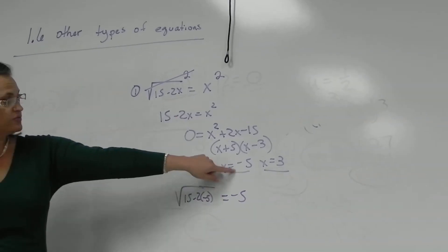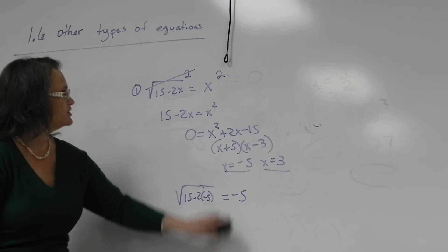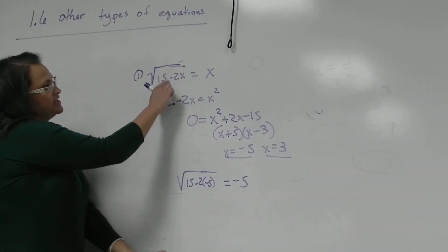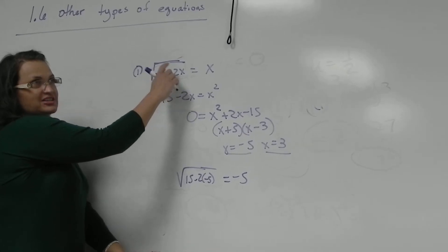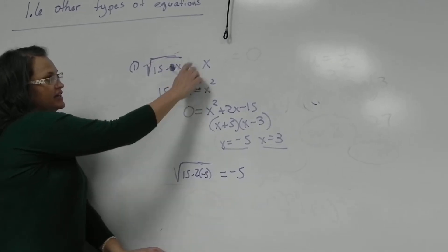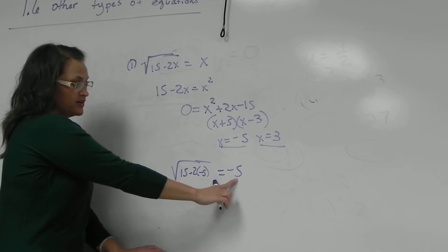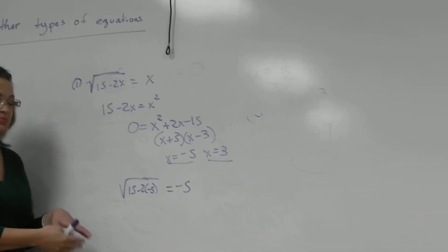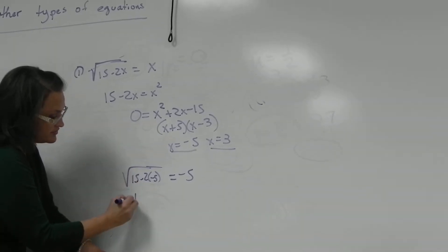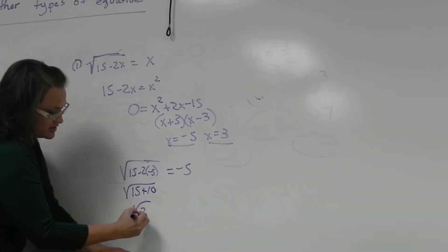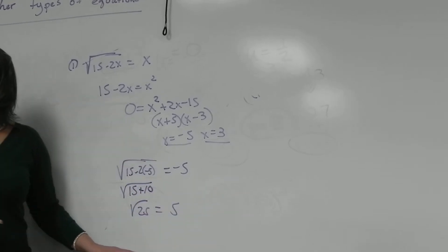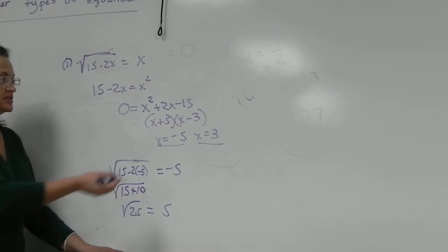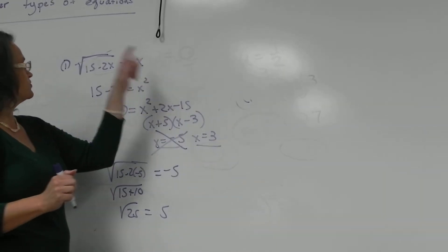When I put in -5, one of the solutions is -5. Remember, the original problem looked like this. 15 - 2 times -5 equal to, plugging in -5 there. The square root never equals a negative, unless there's a negative on the outside of it, you know, but this is not true. That would be 15 + 10, or 25. The square root of 25 is not -5. So the sign thing, like I mentioned earlier, sometimes messes this up. So throw out that solution.